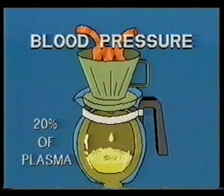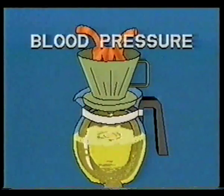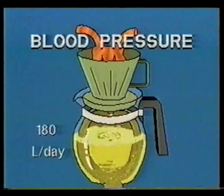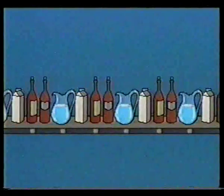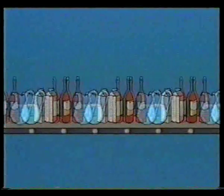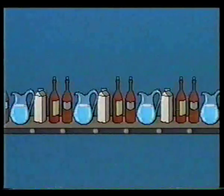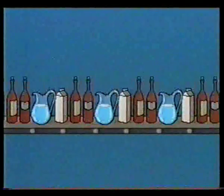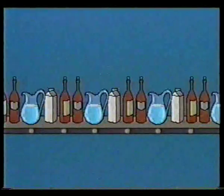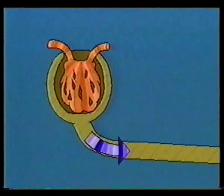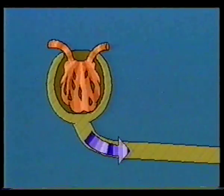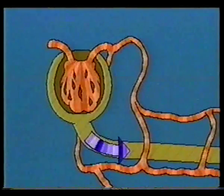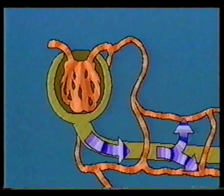Unregulated, this process would produce about 180 liters of filtrate a day — just imagine the problem of replacing that much liquid every 24 hours. Much of the osmoregulation function of a kidney nephron is to return to the blood useful water and essential chemicals, and so prevent their waste.